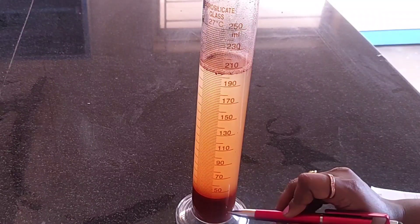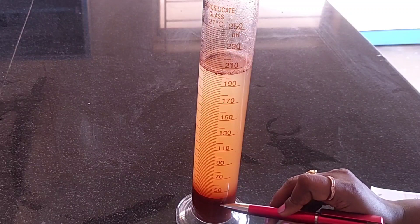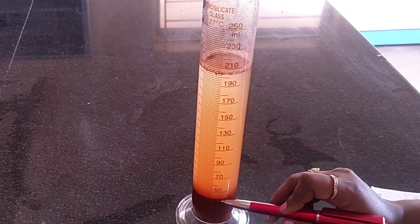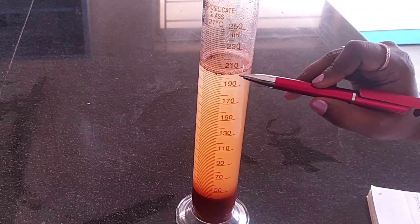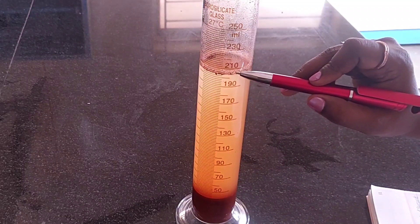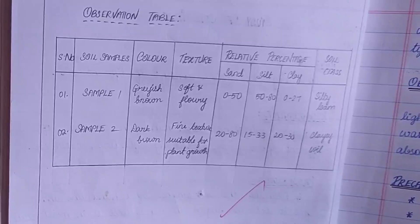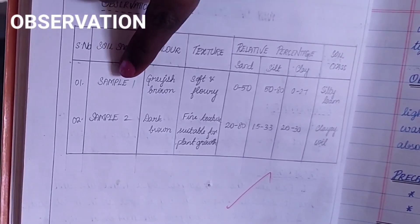Now record the thickness of the layer formed by different types of particles in the measuring cylinder and calculate the relative percentage. Similarly, record the relative percentage for the other soil sample as well.